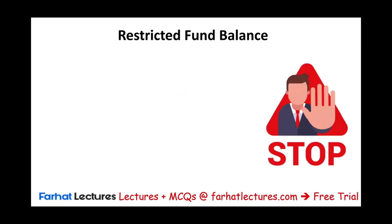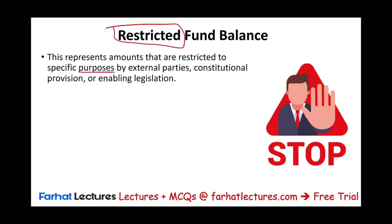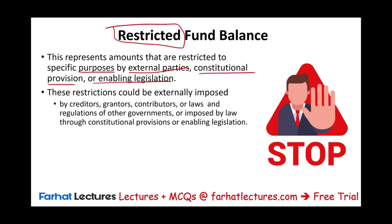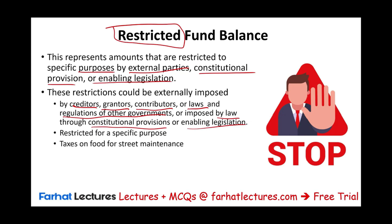The first spendable category is restricted fund balance. It's spendable but restricted — it represents amounts restricted for specific purposes by external parties, constitutional provision, or enabling legislation. This could be creditors, bankers, grantors, other governments, or contributors who want to restrict the use of money for a specific purpose. It could also be restricted by laws or regulation of other governments. For example, a law that collects taxes on food and designates that money to maintain streets — the money collected is restricted. It's the most constrained category.